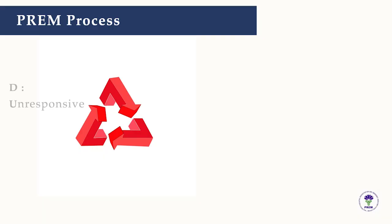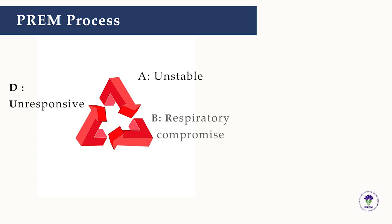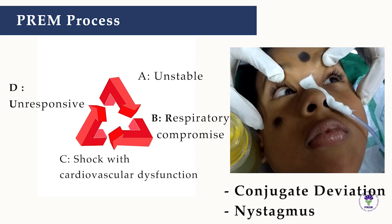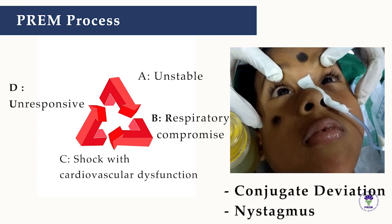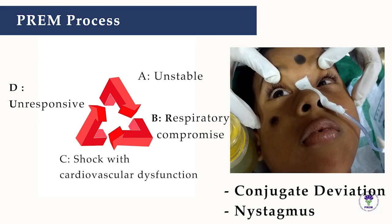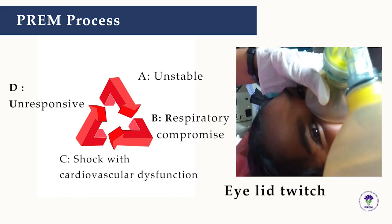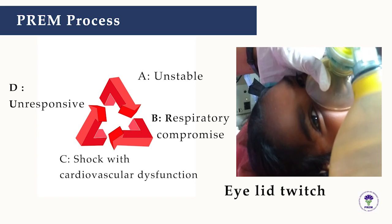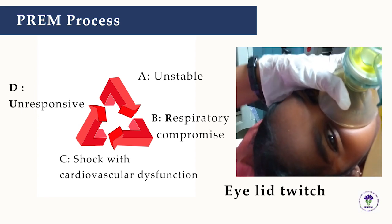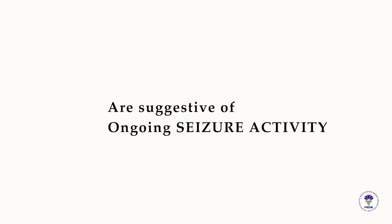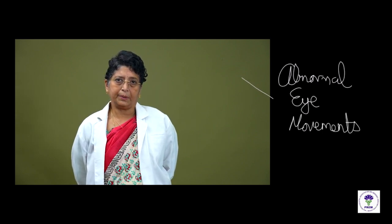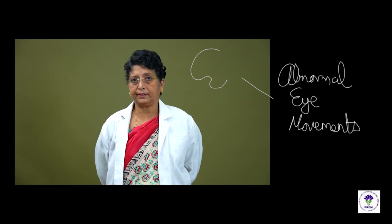In the child who is unresponsive with an unstable airway, respiratory compromise, or shock with cardiovascular dysfunction, eye signs of conjugate deviation, nystagmus, with or without eyelid twitch are suggestive of ongoing seizure activity. These eye movements have been noted in two different conditions in seriously ill children.